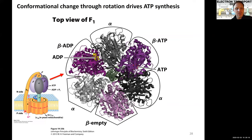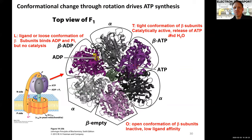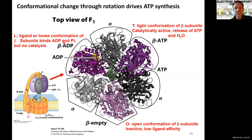Per rotation, every subunit goes through all three stages. The empty one is called the open conformation — it's inactive with very low affinity for substrate. As the shaft moves to the next, the subunit adopts the L or 'loose' conformation: it opens up, increases affinity for substrate, and can bind ADP and phosphate. The third is the T or 'tight' conformation, where catalysis actually occurs and ATP is produced.